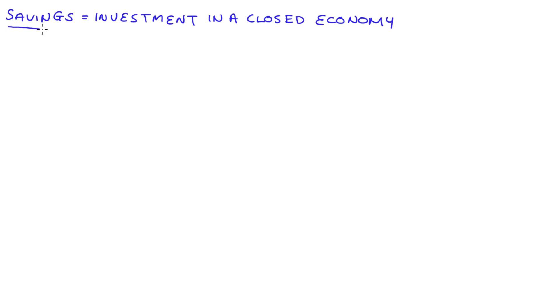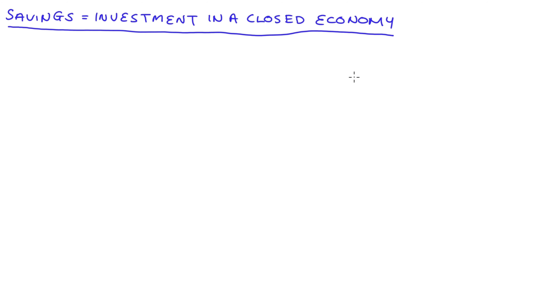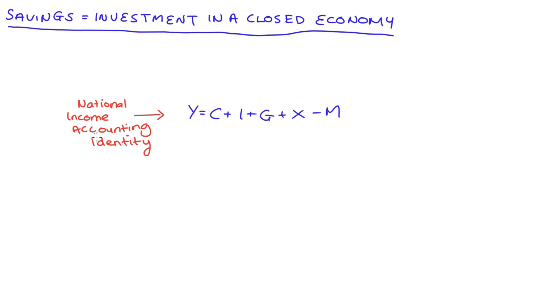Hi everyone. In this video I'm going to go through a simple proof of why we take savings to be equal to investment in a closed economy. I'm just going to start with the national income accounting identity.